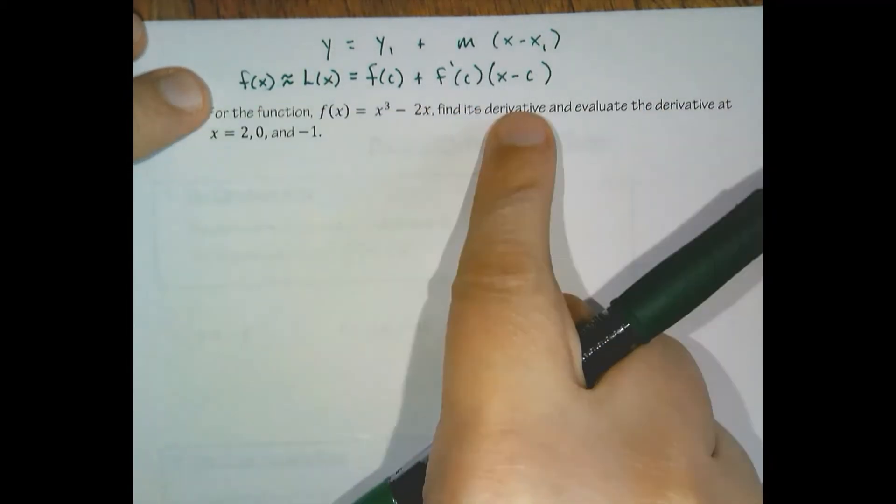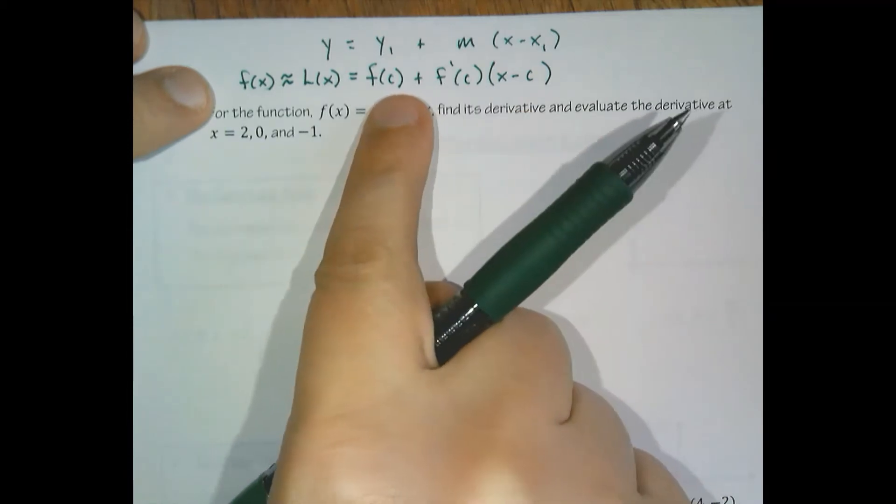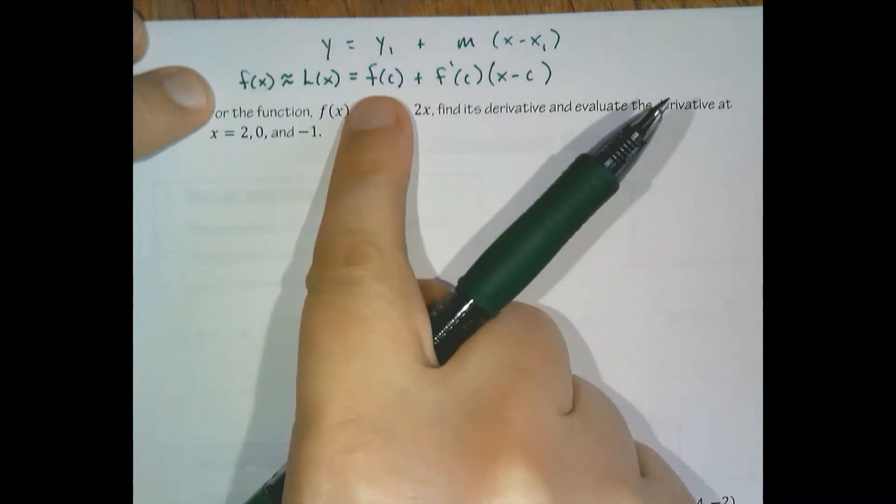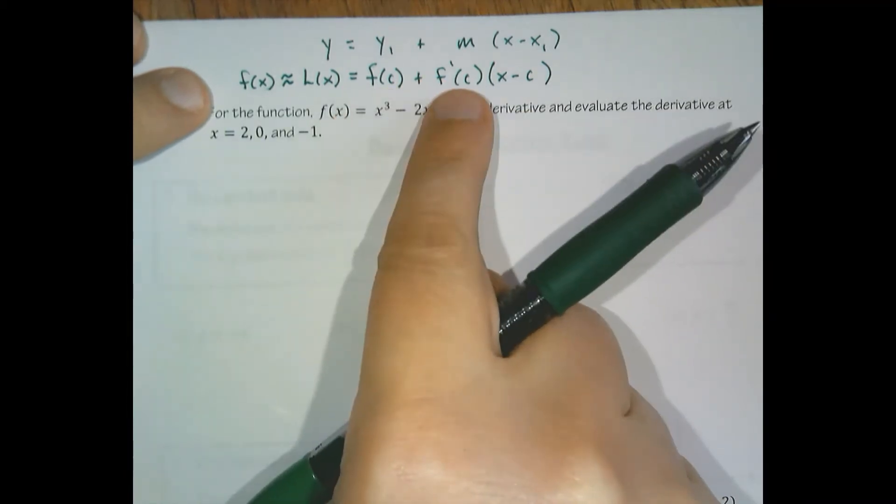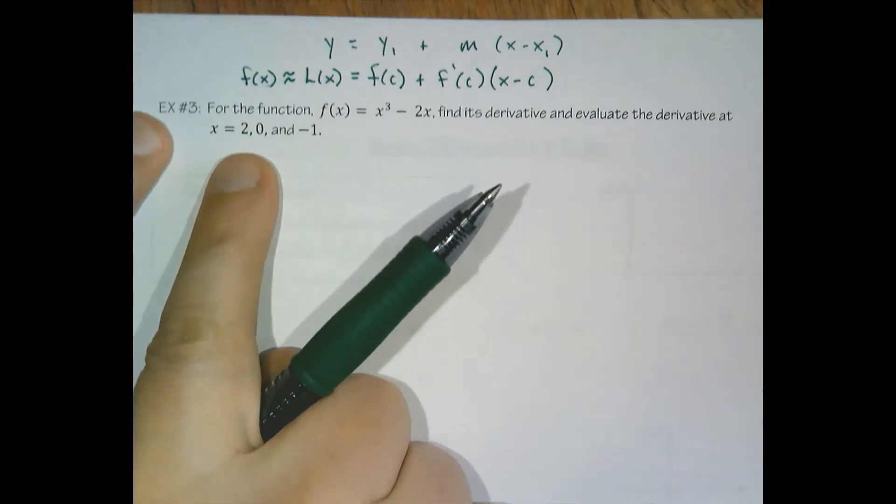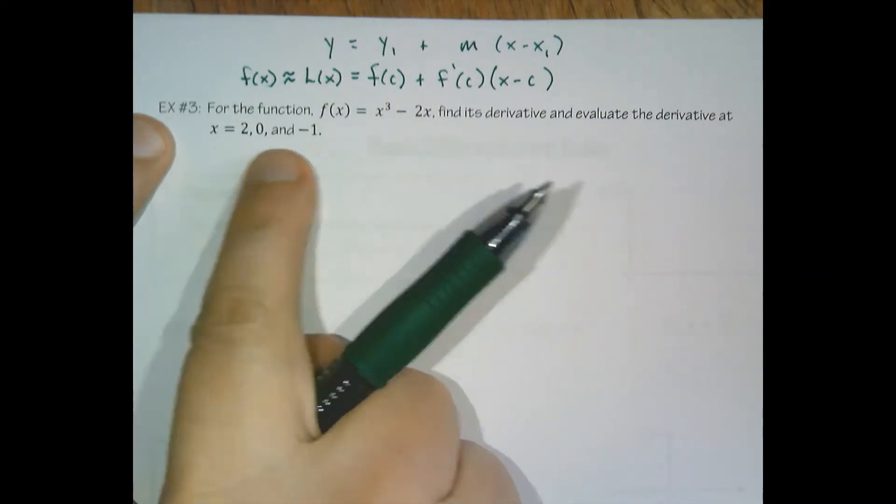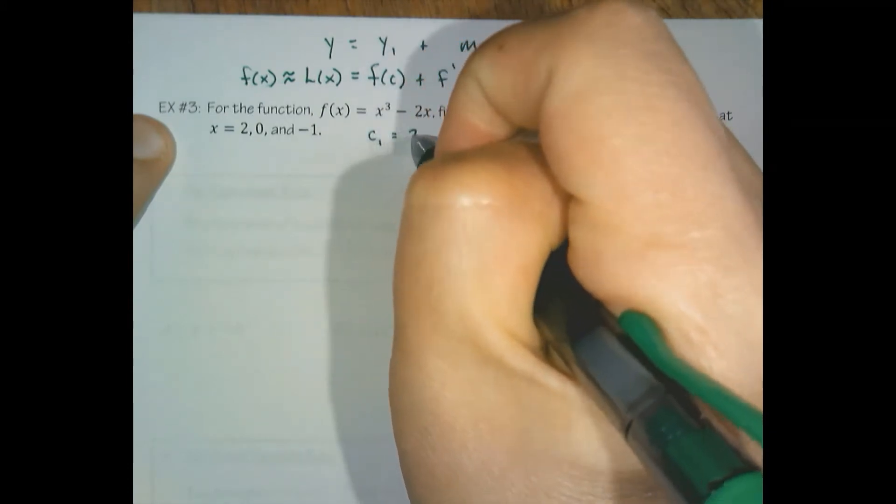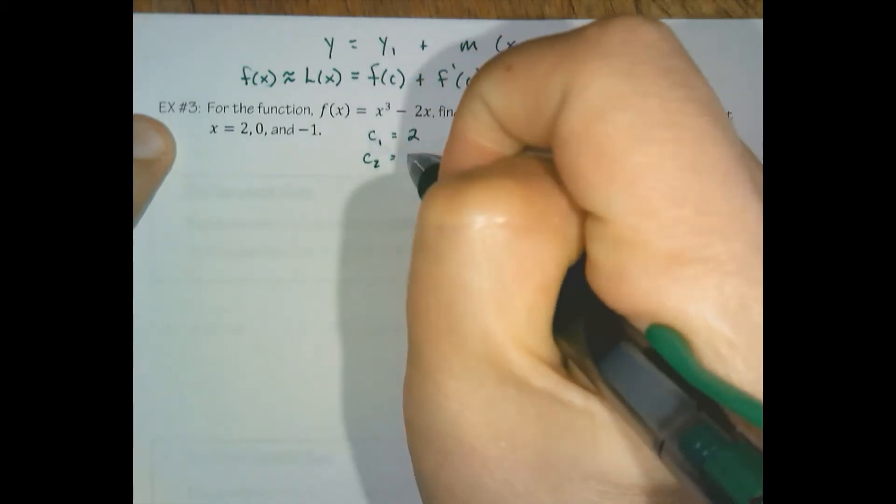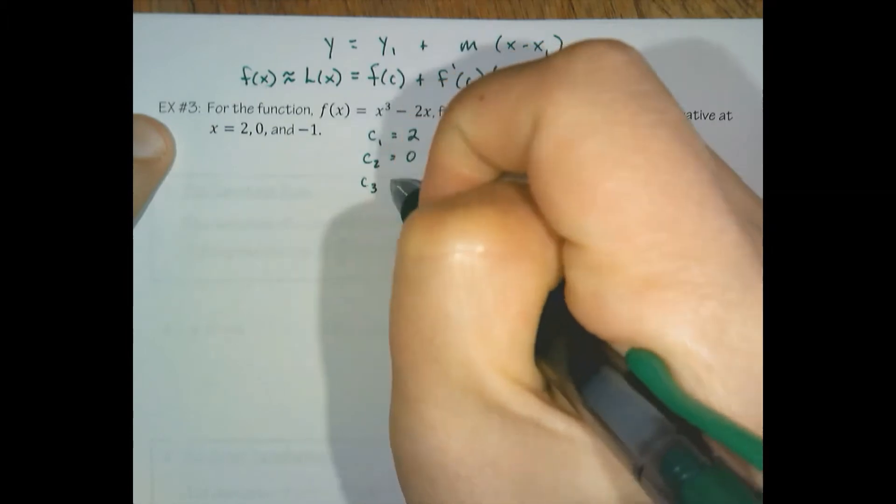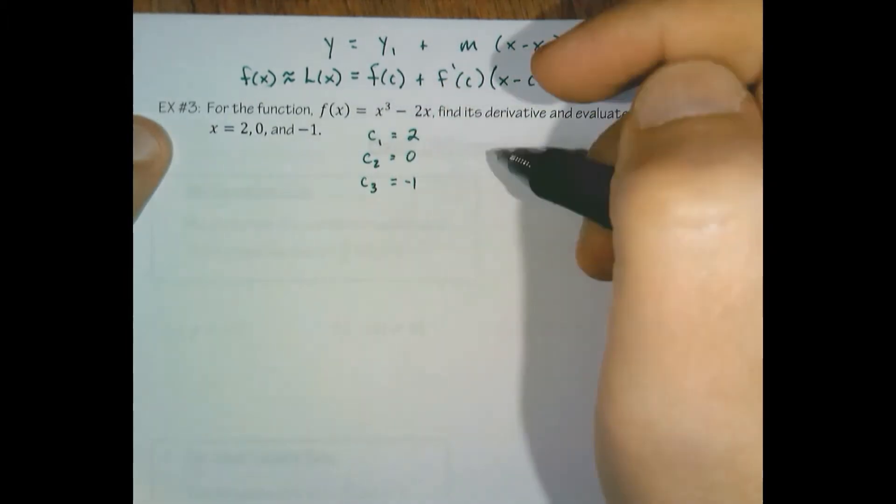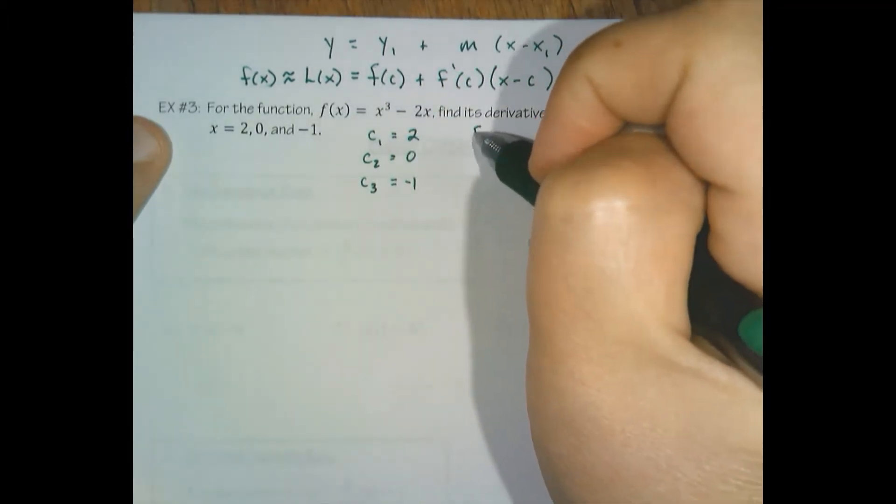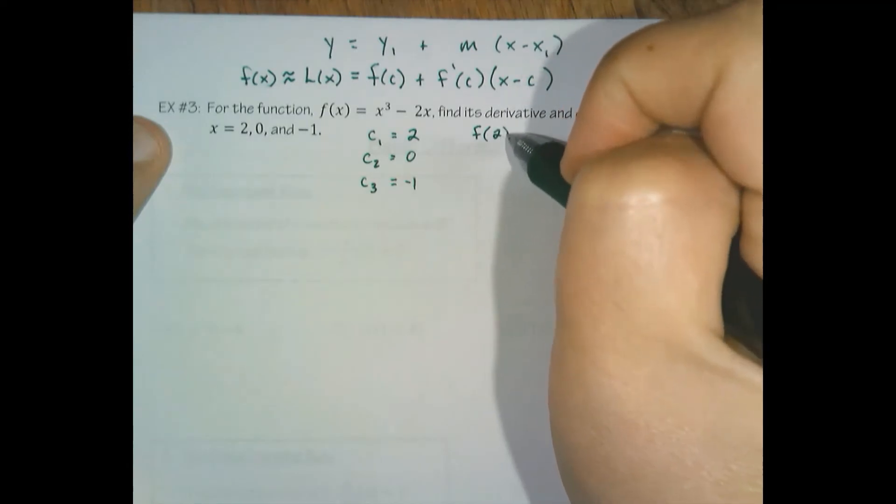So this is the way I like to lay it out in class. We need to know where our center is, and we need to be able to evaluate the function and the derivative. In example three, we're given the location of three different centers. Center one is two, center two is zero, and center three is negative one.